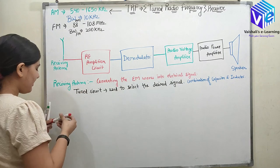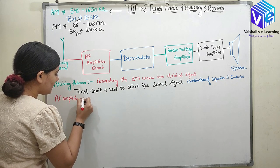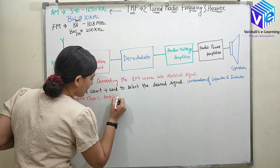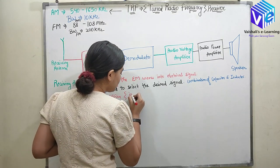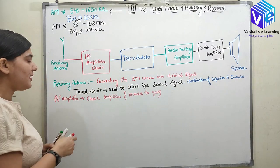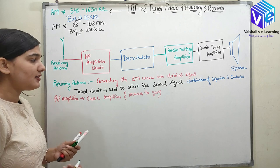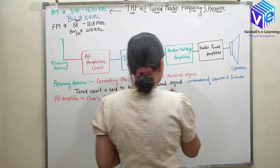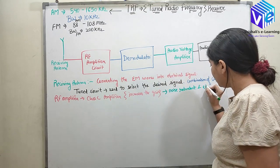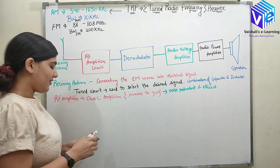After the tuned circuit, the RF amplifier amplifies the signal — as the name suggests. It is a class C amplifier. When a signal travels in the wireless environment it gets attenuated, so the amplifier boosts it back up. The class C amplifier is noise redundant and efficient, which is why it is used in the RF amplifier circuit.